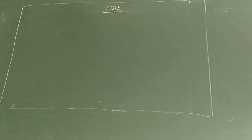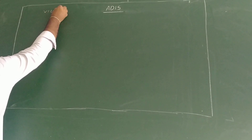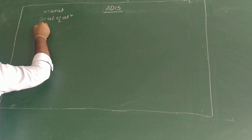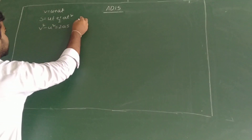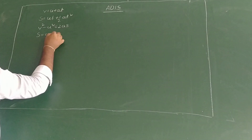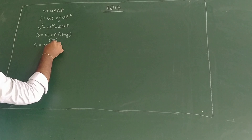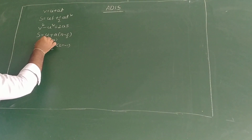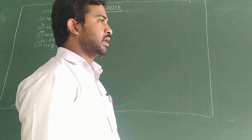There are four equations of motion, but we will first learn three. The first is v = u + at. The second is s = ut + ½at². The third is v² - u² = 2as. And the fourth, which gives distance traveled in the nth second, is s = u + (a/2)(2n - 1).